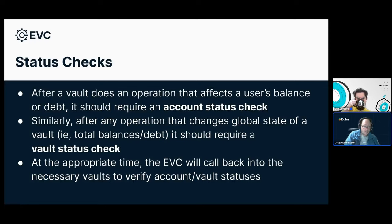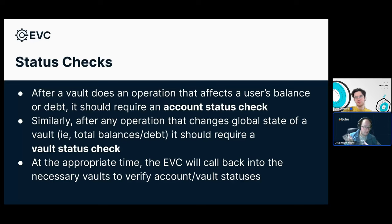Those relationships are enforced with these things called status checks. From the vault's perspective, as you saw in workshop two, it's relatively simple to implement. Whenever a vault does some kind of operation that changes the user's balance, it has to require an account status check for that user — it'll call onto the EVC and say: I did something to this user's balance, please make sure it's okay, either now or in the future. Similarly, any operation that affects the global status of the vault should do a vault status check. Both of these operations are grouped together, amortized in one call. The EVC is the one who decides when to actually verify that these checks have changed the state in an acceptable manner — it will call back into the necessary vaults at the appropriate time.